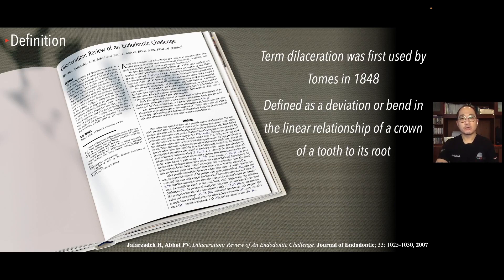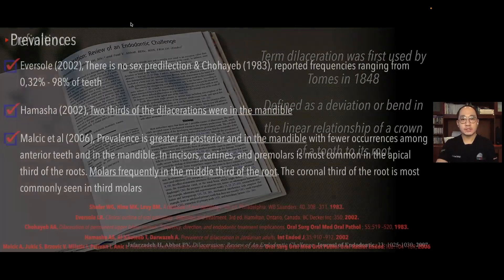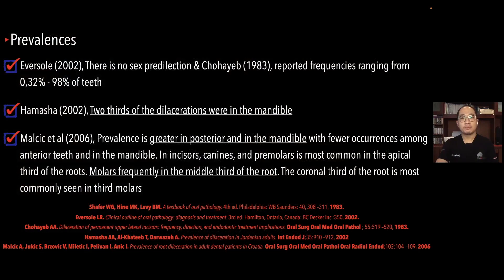These definitions will of course be followed by prevalence. Looking at the literature, in 2002 Alversol stated that there is no sex predilection — meaning male and female patients have the same prevalence of root canal dilacerations. In 1983, Kohayev reported a frequency ranging from 0.32% up to 98% of teeth.